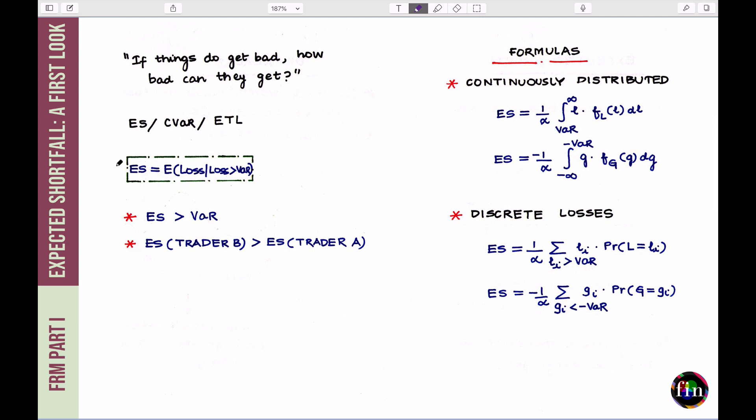Now, in terms of mathematically defining the ES, we define it as the expected value of the loss, given the loss exceeds the VAR. This directly answers this question. If things do go bad, that means, if losses do exceed VAR, then conditional on that happening, what is the average or expected loss I am set to incur. So, based on the expectation operator sitting here, think of this to be a probability weighted average.